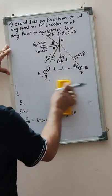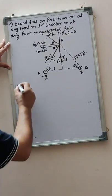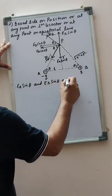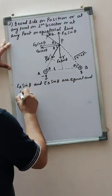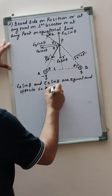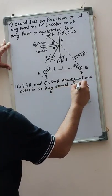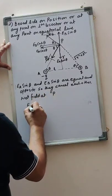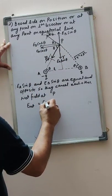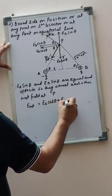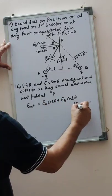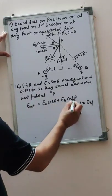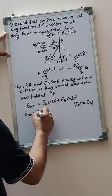So Ea sin theta and Eb sin theta are equal and opposite, and they cancel each other. The net field at P: the two cosine components being in the same direction will be added up — Ea cos theta plus Eb cos theta. Since the magnitude of Ea equals the magnitude of Eb, this can be written as net field equals twice Ea cos theta.